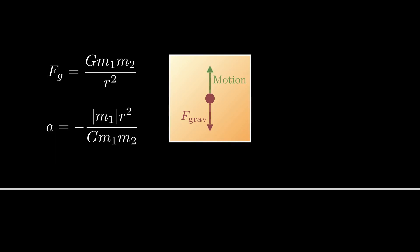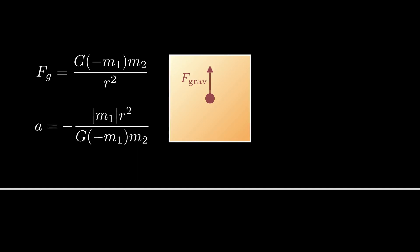But the negative mass also has negative gravitational mass, which means the gravitational force flips direction. Gravity pushes up on a negative mass, which makes it fall down.